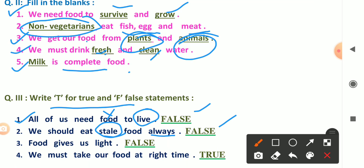Number three: food gives us light. Food gives us light? Light is given by bulb or tube light. Food doesn't give light, so it is false. Number four: we must take our food at right time. So it is true.